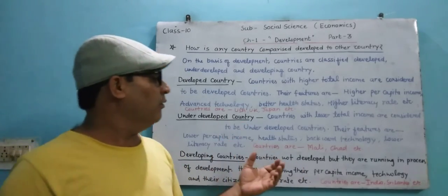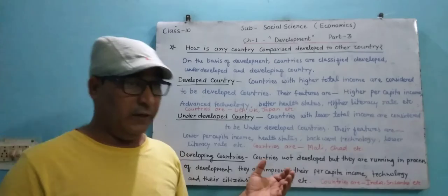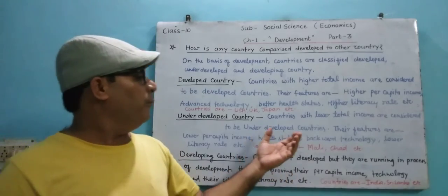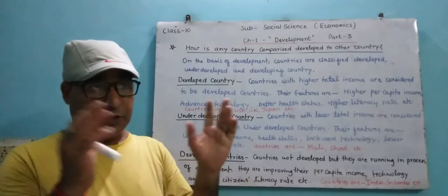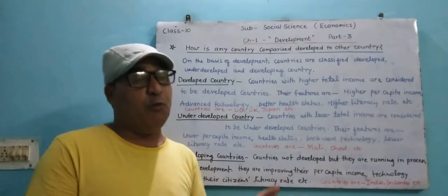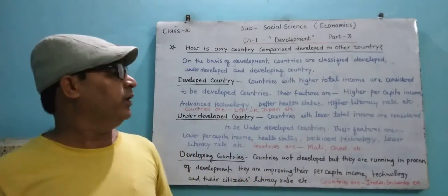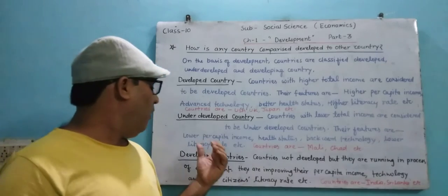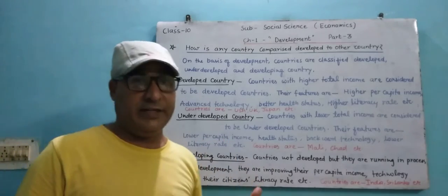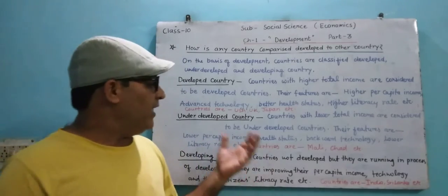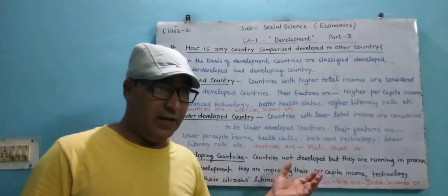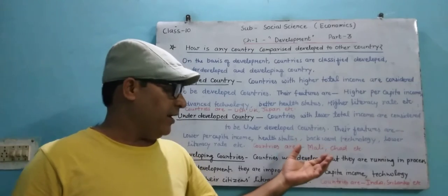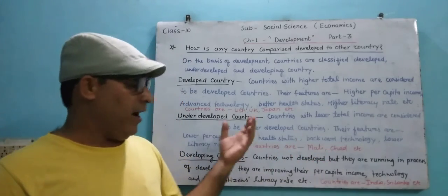Further features of underdeveloped countries include backward technology and lower literacy rates. Examples of underdeveloped countries are Mali, Chad, and others.